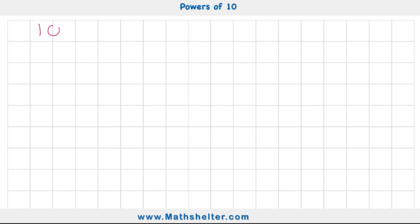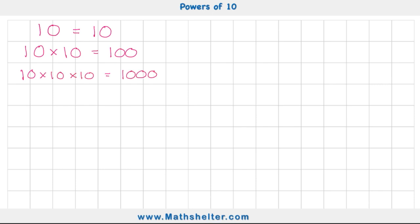Hopefully you might start to catch on to a bit of a pattern here. My second example would be 10 times 10, and 10 times 10 equals 100. Let's do a couple more — if I had 10 times 10 times 10, that equals 1000. At this point you're starting to notice a pattern with our standard form numbers: 10, 100, 1000.